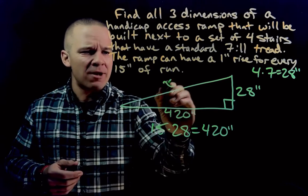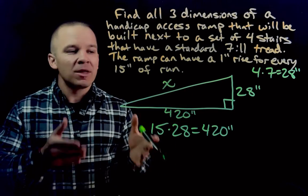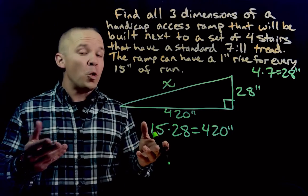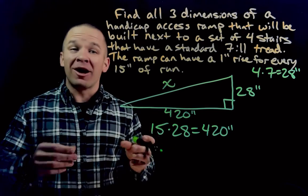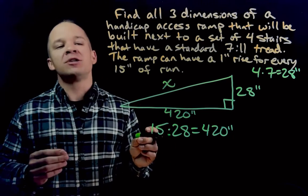Now, how am I going to find this last guy right here? My hypotenuse of this right triangle. Ooh, I've got an idea. How about a little Pythagorean theorem to solve for that bad boy?